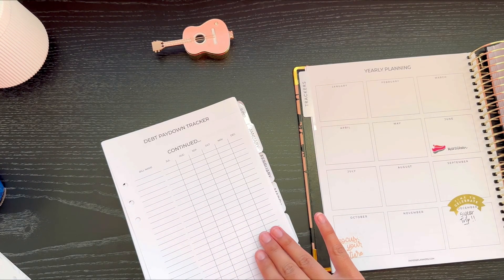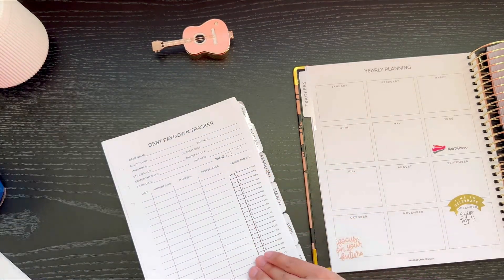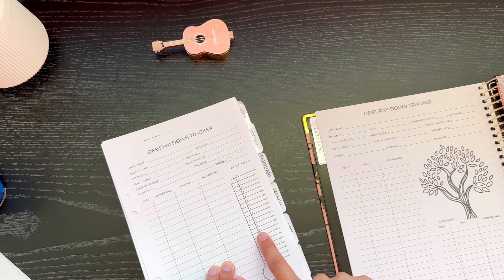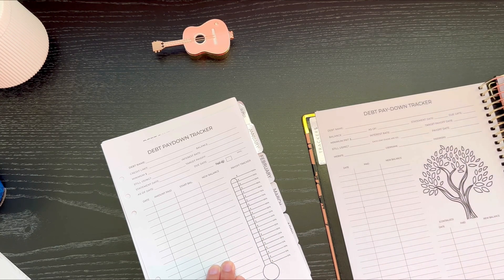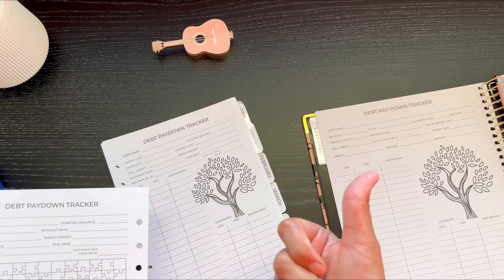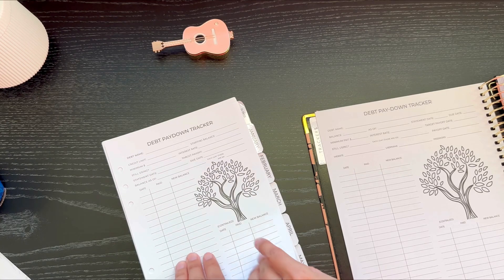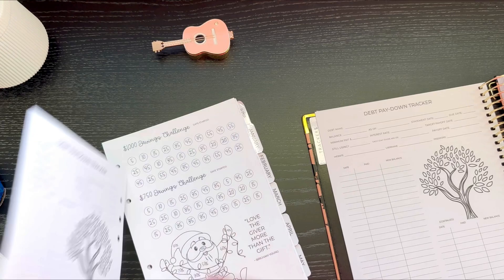You also get the same bill calendar. You get the everything I owe. You get the debt trackers. The debt pay down tracker in the mini has a thermometer. I think it just has three options in the mini. It has this one, the tree and the puzzles. And the book only has the tree and the puzzles. I think that was just a design choice that I made.